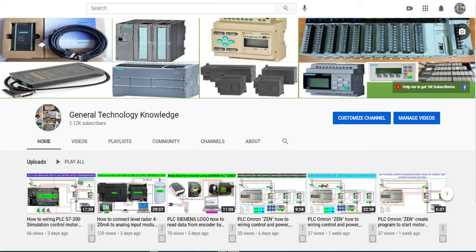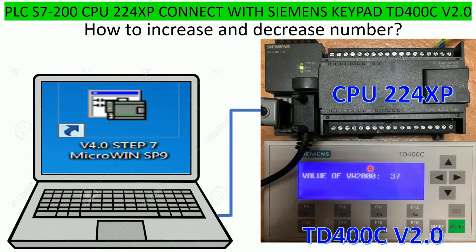Hello everyone, welcome back to my channel — General Technology Knowledge. Today I would like to show and share how to increase and decrease a value using PLC S7-200 CPU 224 XP and the keypad TD 400C version 2.